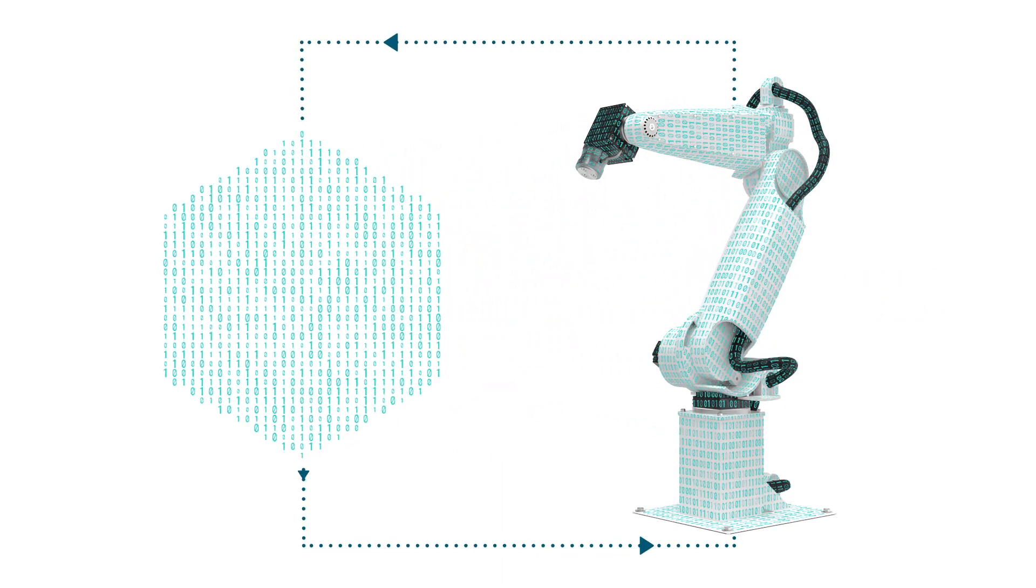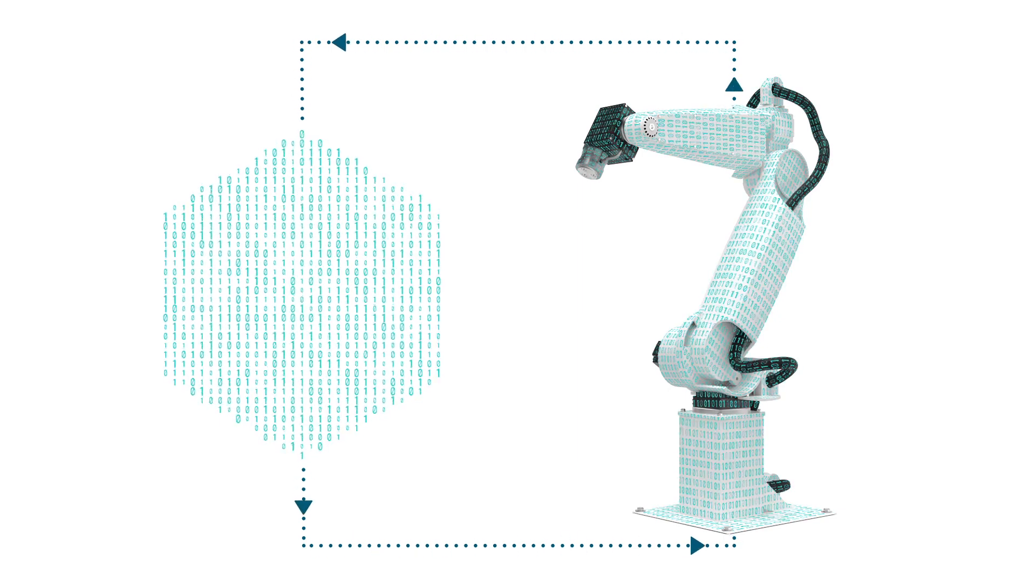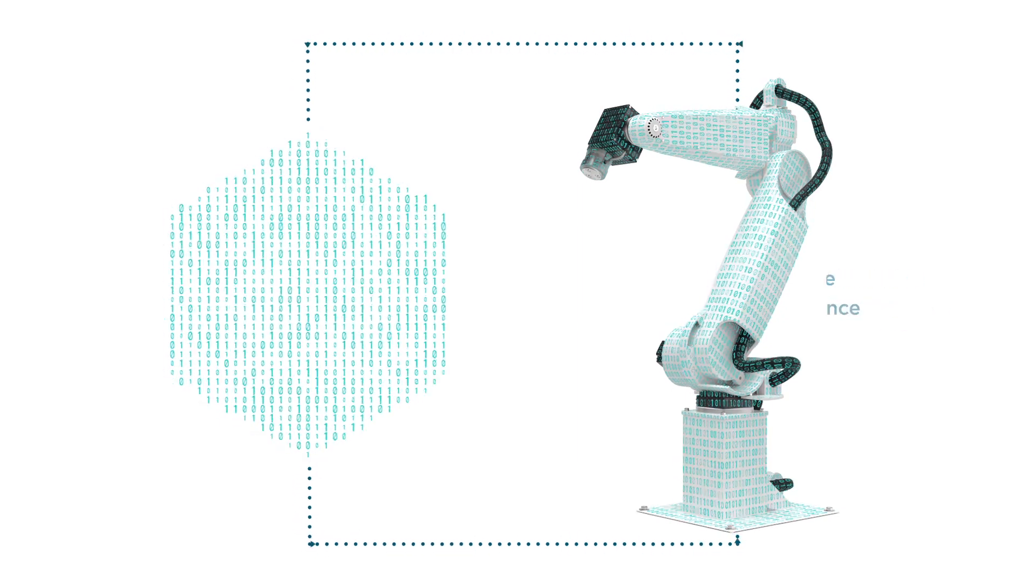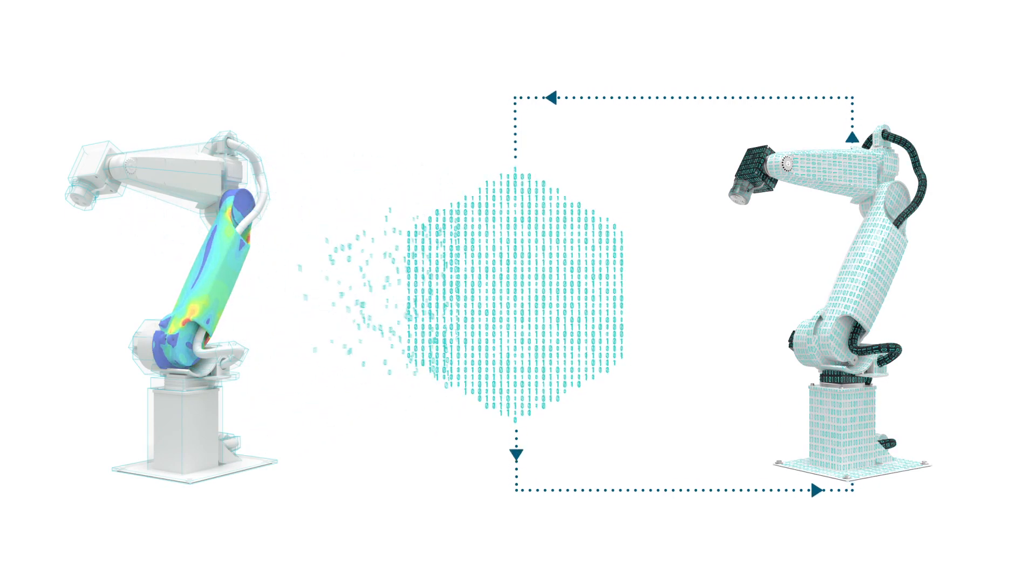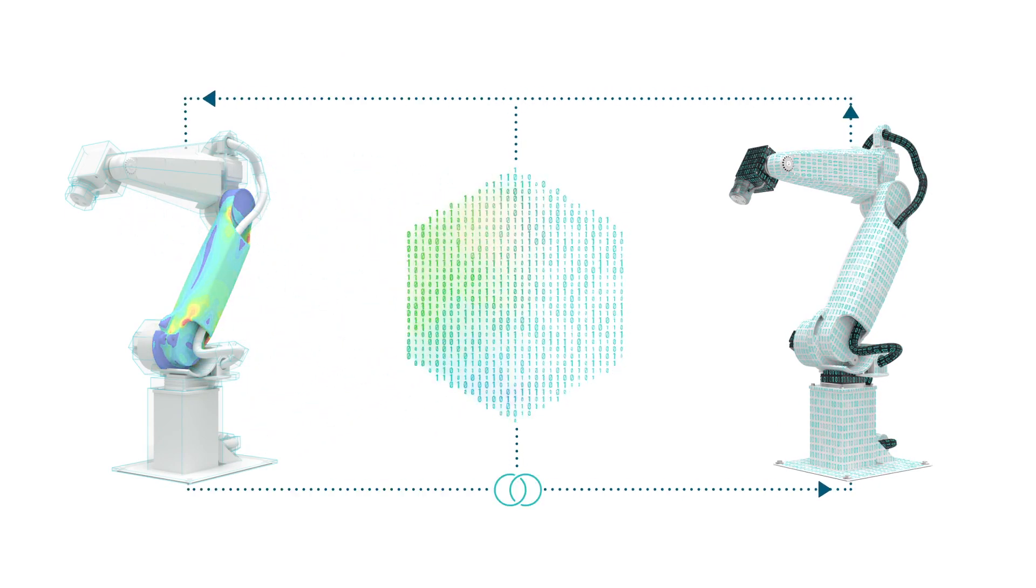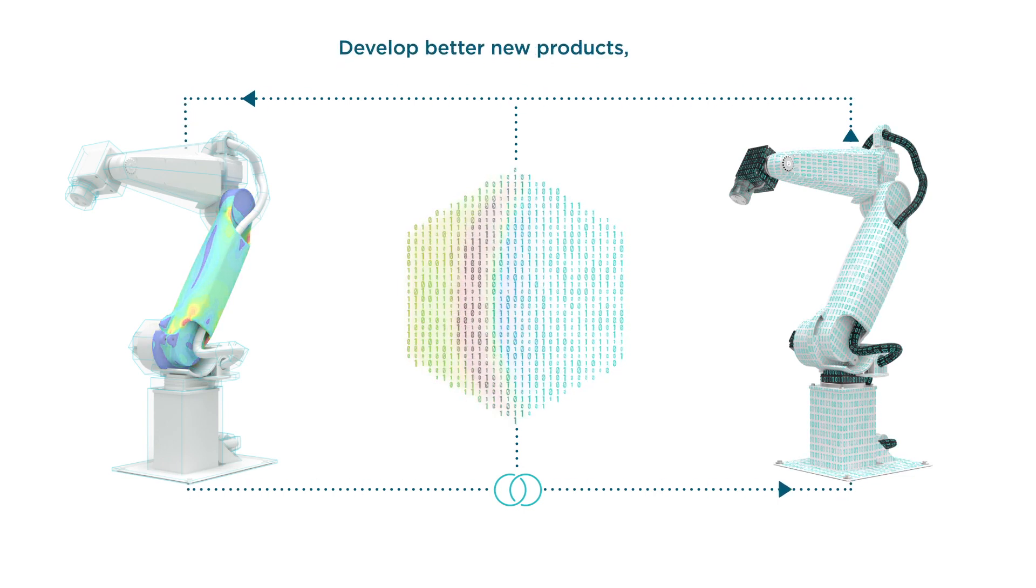adjust the operation of the physical asset, such as when and where to perform predictive maintenance. Physics-driven digital twins help companies develop future generation products by leveraging 3D and 1D modeling and simulation in order to develop better new